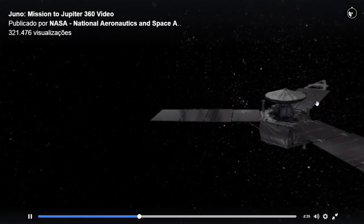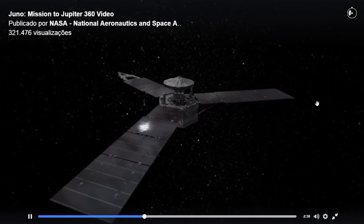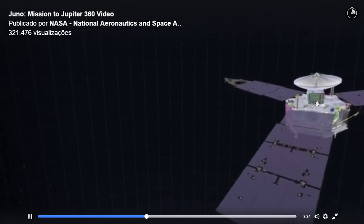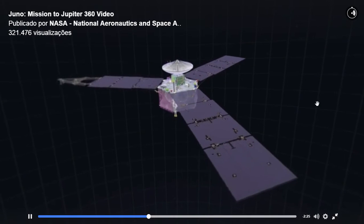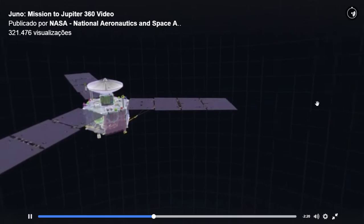Turn to see two views of Juno, in regular and X-ray vision. The three panels are solar arrays, each about 30 feet long. Juno would just fit inside a professional basketball court.